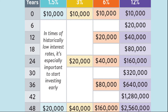So if it takes 9 years to double a $1,000 investment, that investment will grow to $2,000 in 9 years, $4,000 in the 18th year, $8,000 in the 27th year, $16,000 in the 36th year — and it just keeps going every 9 years.